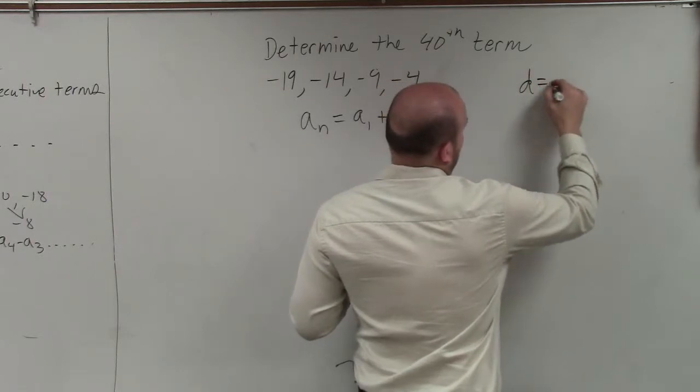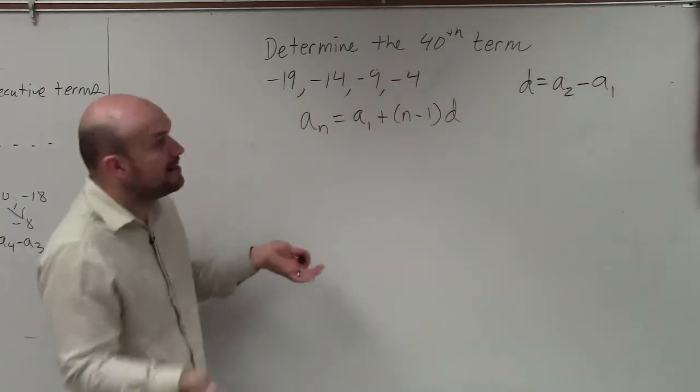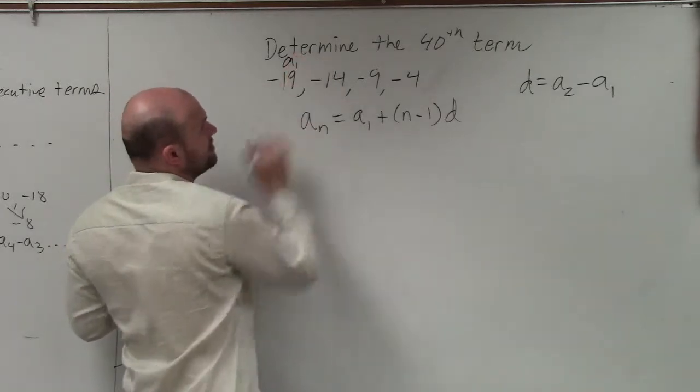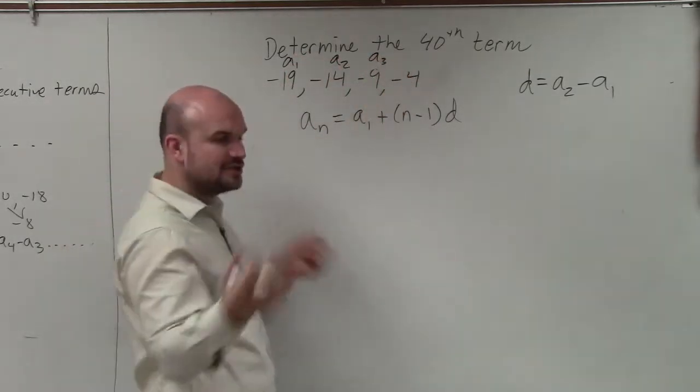So remember d, the best way to identify d was to simply subtract a2 minus a1. Now remember, a1 is your first term in your sequence. a2 is your second term. a3 would be your third, and so on.